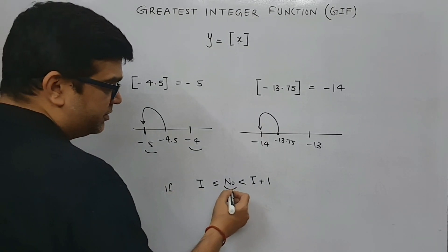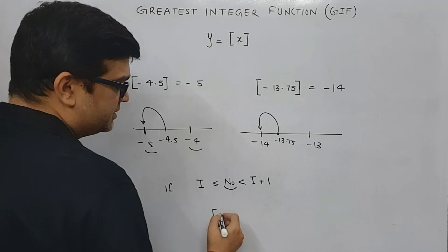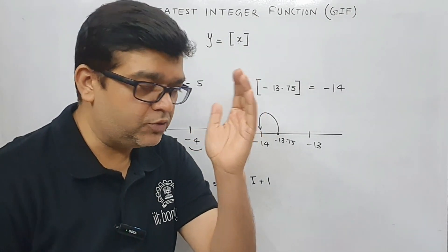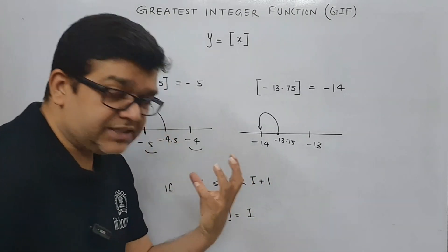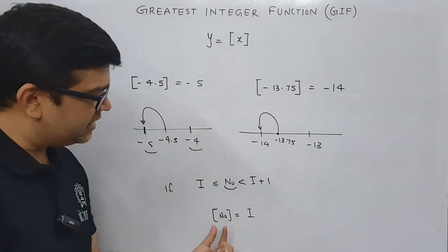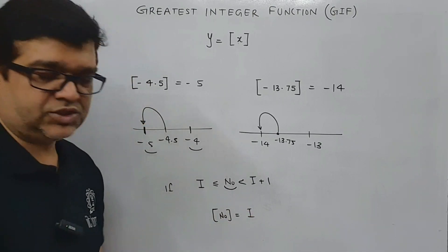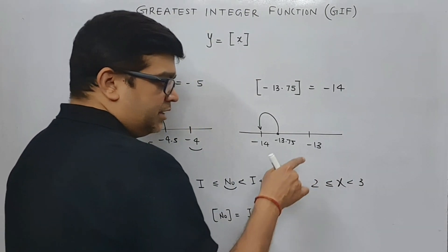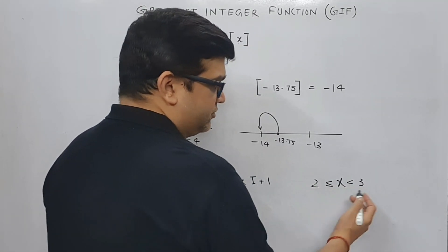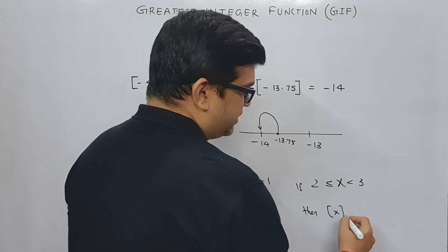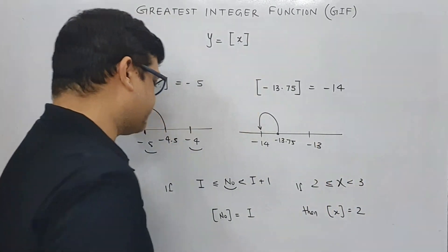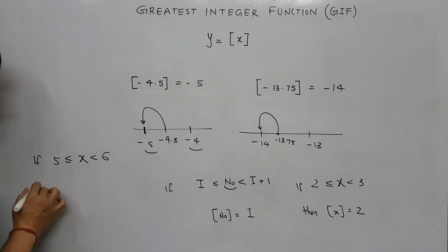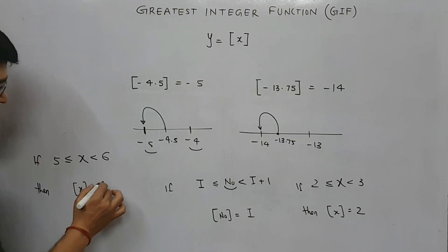So if any number lies between two consecutive integers i and i+1, then the box of that number will be the left hand side integer — the immediate left integer. This is a very important point to hold in mind. For example, if x lies between two and three, box of x will be two. If x lies between five and six, box of x will be five — the left hand side integer.